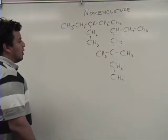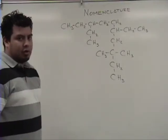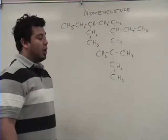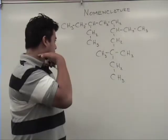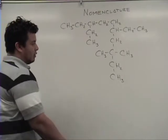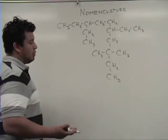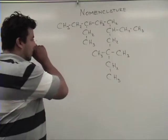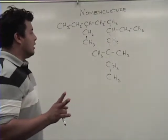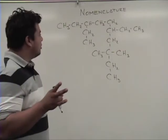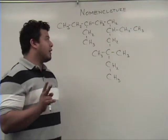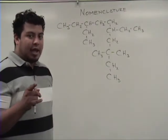So the first thing we got to look for is functional groups. You have to memorize your functional groups — you have to know double bonds, triple bonds. This is a simple alkane that I draw, so I know there are no functional groups, no double or triple bonds. The second thing I want you to do is to box the longest chain of carbons. The longest chain of carbons I'm going to refer to as the parent chain.